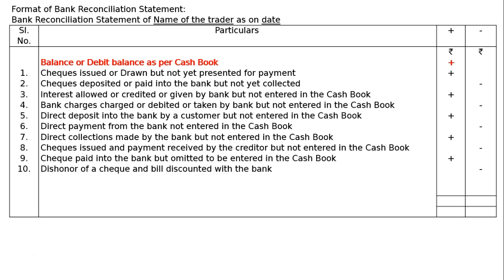The tenth item is a dishonored check or bill discounted with the bank. When a bill is discounted, the bank deducts the amount from our account if it is dishonored, so we deduct the bill discounted amount from the cash book balance to get the pass book balance. The eleventh item is a check entered in the cash book but not sent to the bank — we recorded the receipt and increased the cash book balance, but it was never sent to the bank, so we deduct this amount from the cash book balance to find the balance as per pass book.